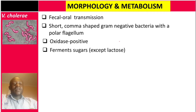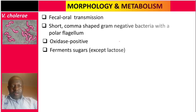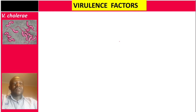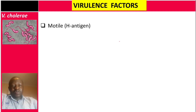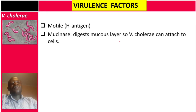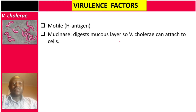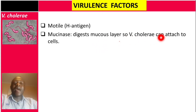It ferments sugars except lactose — this is important, it does not ferment lactose. Now let's talk about virulence factors in Vibrio cholerae. Firstly, because it is motile, it has an H antigen — that's number one. The second is an enzyme called mucinase, which digests the mucus layer so that Vibrio cholerae can attach to the cells.